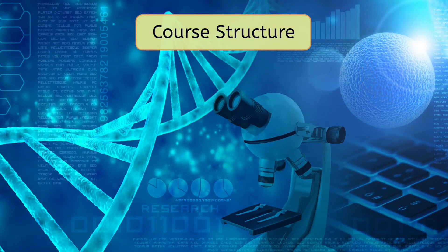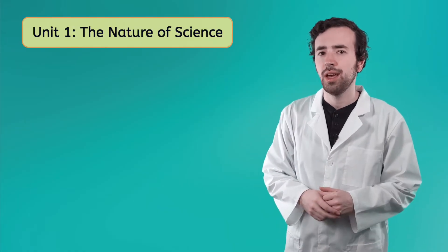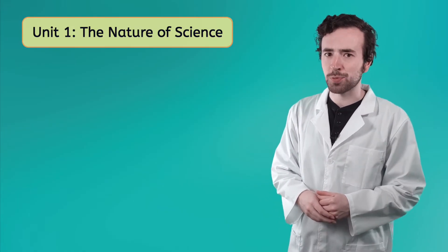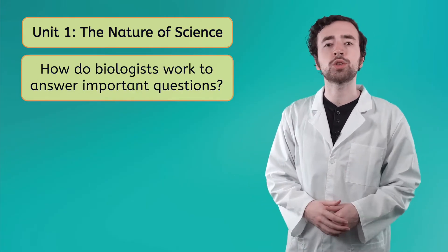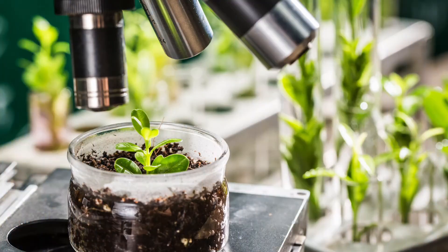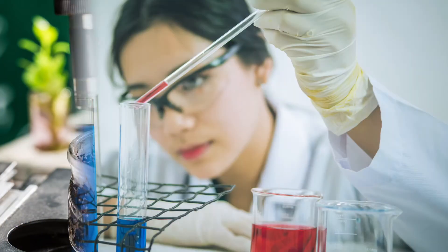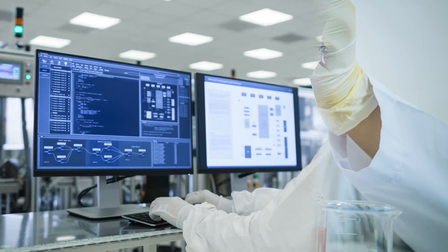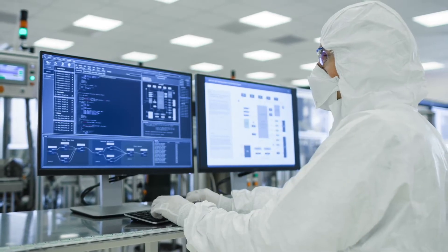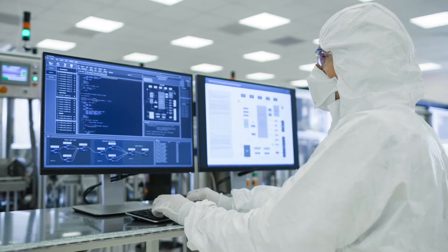Let's take a look at what we can expect from this course. In Unit 1, The Nature of Science, we'll quickly get you up to speed on how biologists work to answer important questions. We'll cover important topics such as how to effectively use the scientific method, the different types of scientific investigations, measuring data, organizing and analyzing that data, and finally, communicating your results in a helpful way.